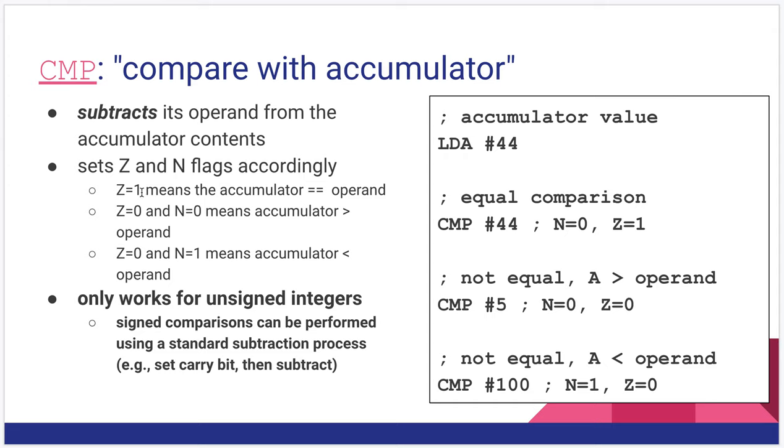If Z equals one, in other words, if the zero flag was set, that means the accumulator and the operand were equal. Because if you subtract one thing from another and you get zero, that infers equality.